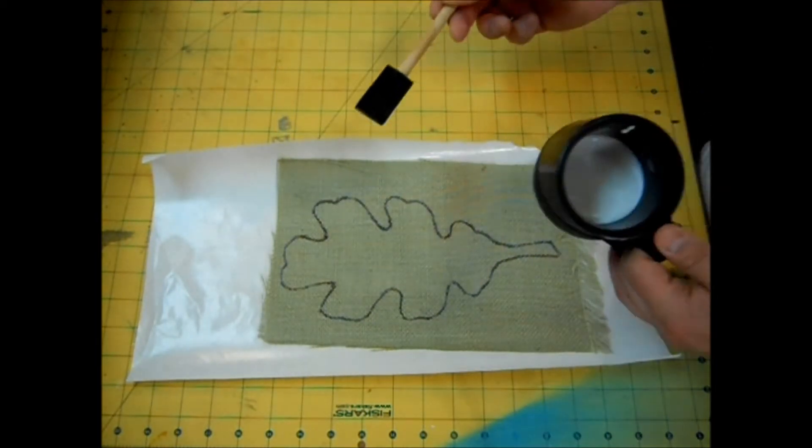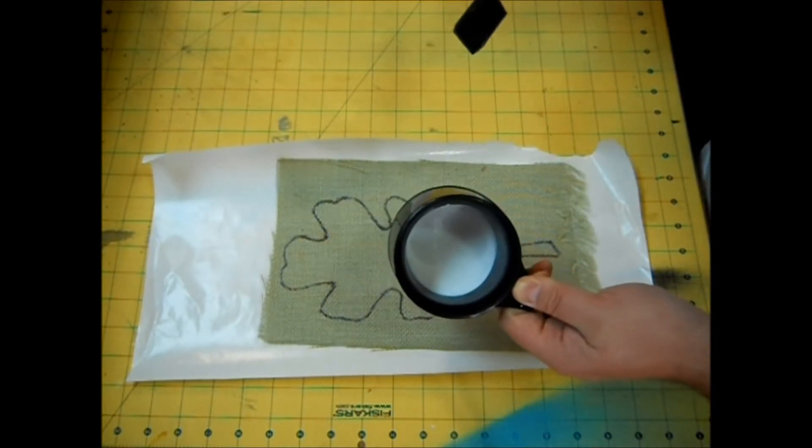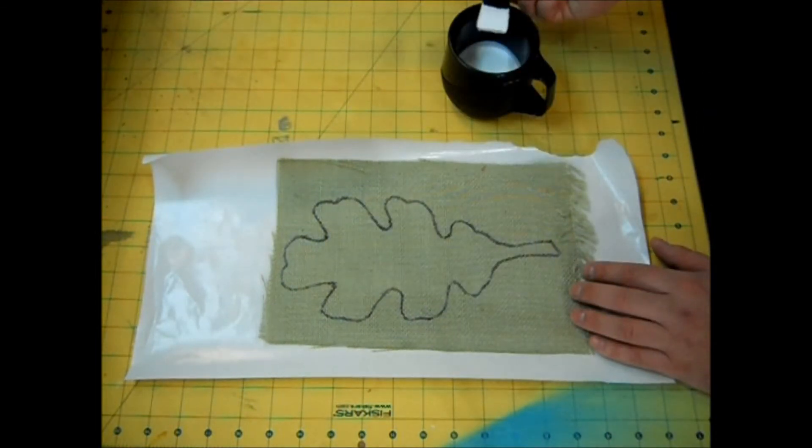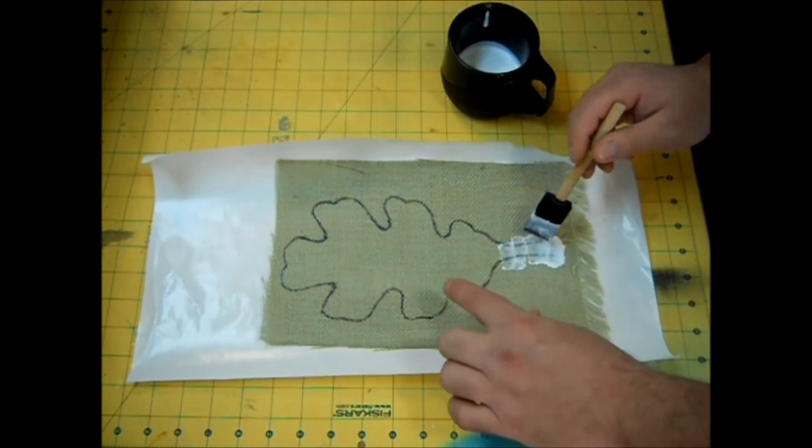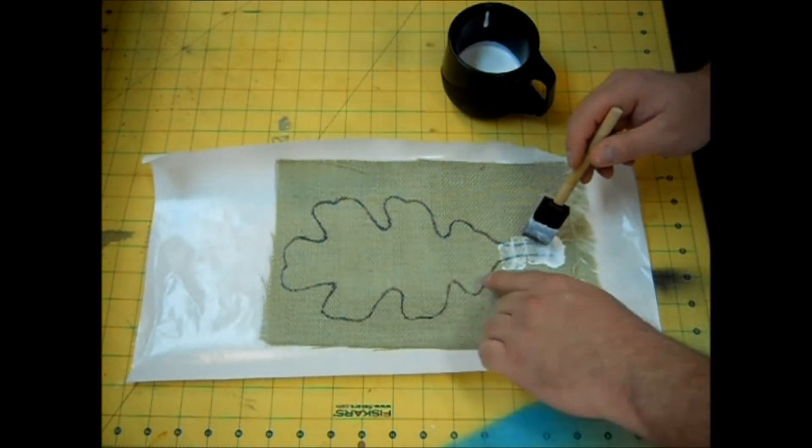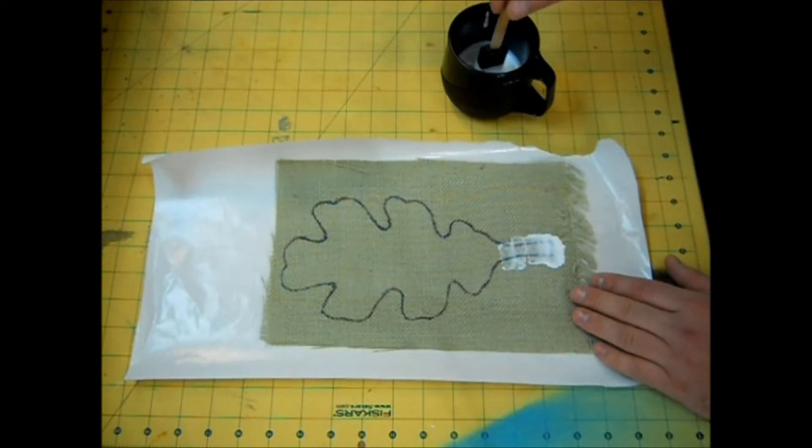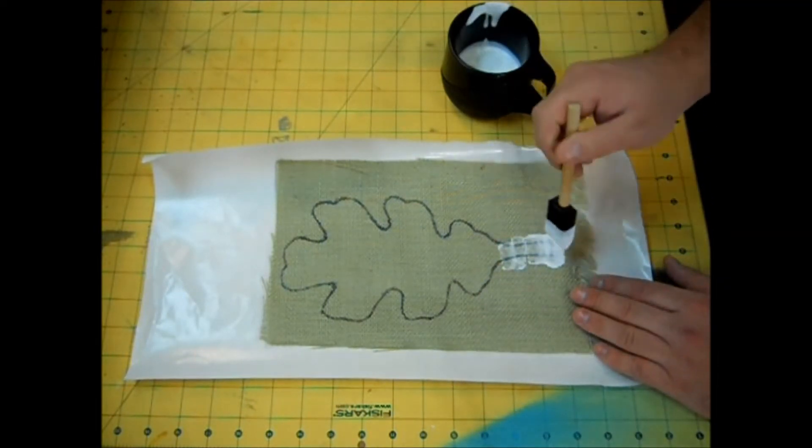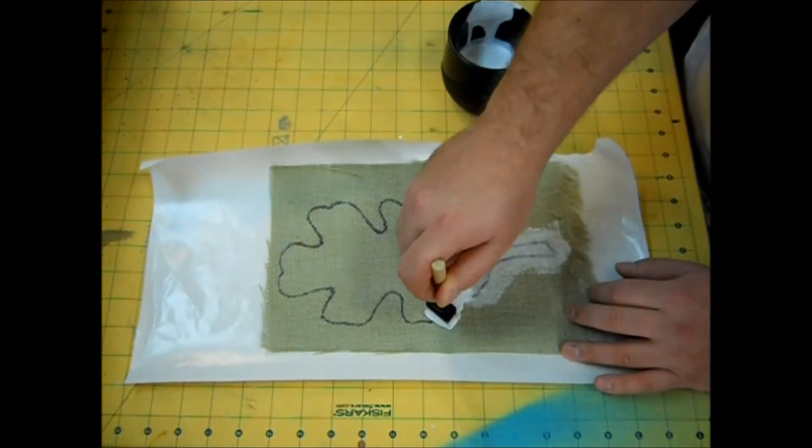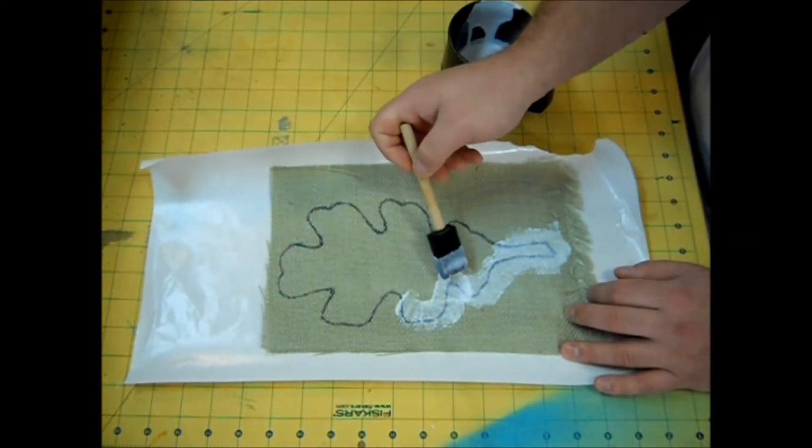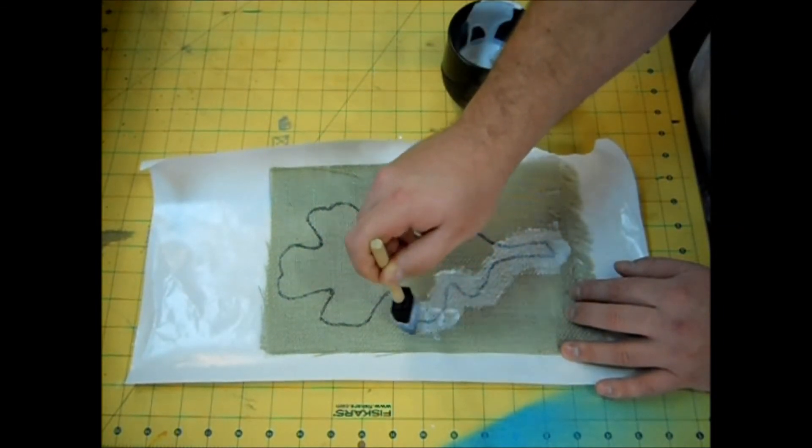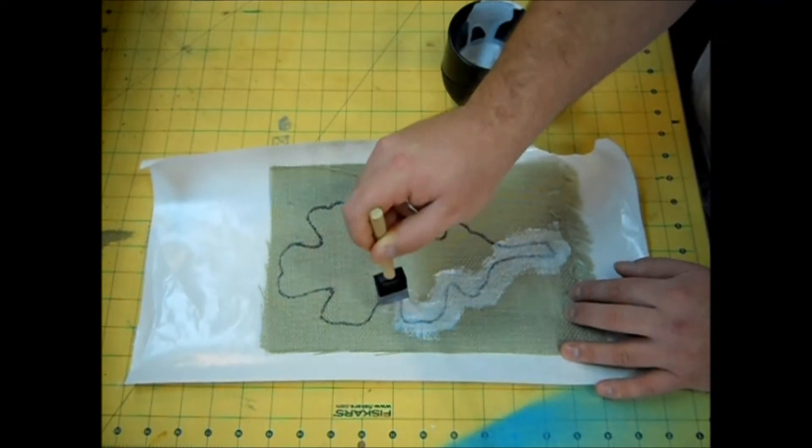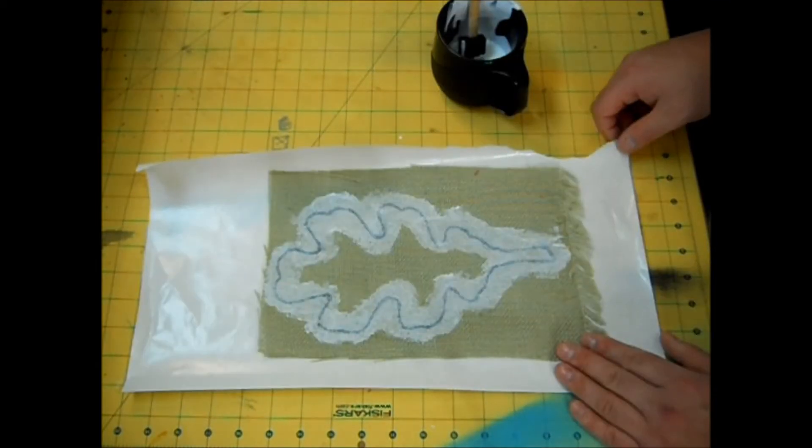Take your foam brush, and I poured a little bit of Mod Podge in this cup here. You just want to pounce along your marker line, and do about a half inch outside the line and a half inch inside the line. If you get any big globs like that, just brush it out. When you've gone all the way around your burlap, set it aside to dry.